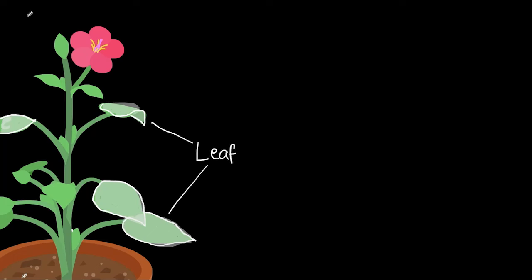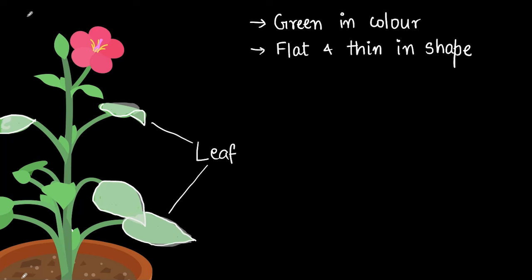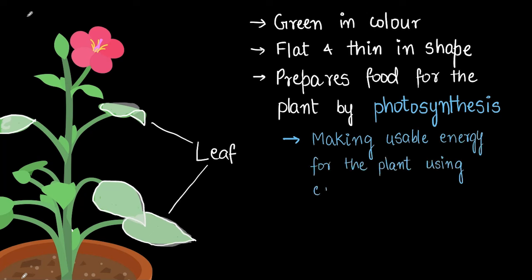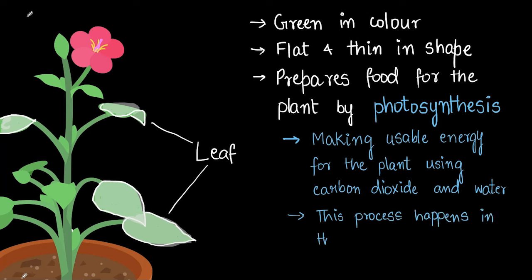Next we will discuss leaves. I've highlighted a few leaves here. Leaves are green in color usually and they're usually flat and thin in shape. Leaves are like the kitchen of the plant — they prepare food through a process called photosynthesis. Photosynthesis is the process by which plants make usable energy using carbon dioxide and water. This happens during the day because it needs sunlight — only in the presence of sunlight is photosynthesis possible. The word 'photo' suggests it's got something to do with light.